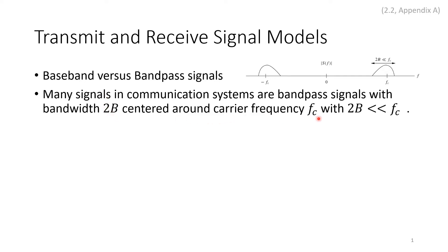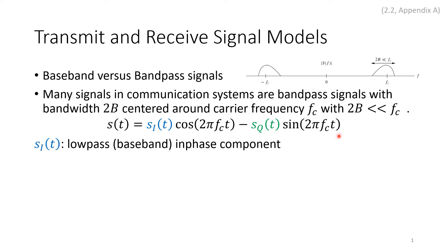Usually the bandwidth is much less than the carrier, and we have narrowband communication. We can represent the signal in terms of two equivalent baseband signals: s(t) equals the in-phase component times cosine minus sq, the quadrature component times sine. We call si the lowpass baseband in-phase component and sq the lowpass baseband quadrature component.